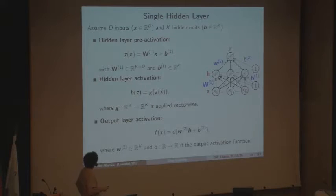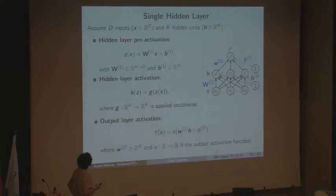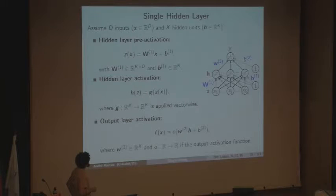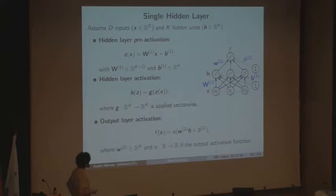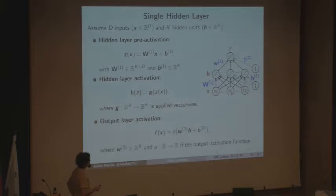Finally, we have an output layer activation. In this example, assuming binary classification with a single output unit, the output layer activation is another nonlinearity applied to the hidden representations with its own bias term. For example, if this is a sigmoid, then this output layer will be equivalent to logistic regression — but now we have this additional hidden layer.